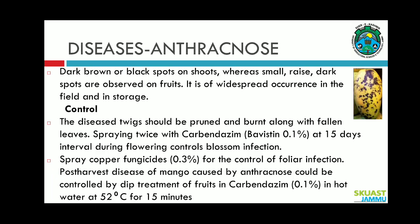Now coming to diseases. Anthracnose: dark brown or black spots are observed on shoots, whereas small raised dark spots are observed on fruits. To control anthracnose, diseased twigs should be pruned and burnt along with fallen leaves. Spray carbendazim (Bavistin) 0.1 percent at 15-day intervals during flowering to control blossom infection. Spray copper fungicide 0.3 percent for control of foliar infestation. Post-harvest anthracnose can be controlled by dipping in carbendazim 0.1 percent in hot water at 52 degrees Celsius for 15 minutes.